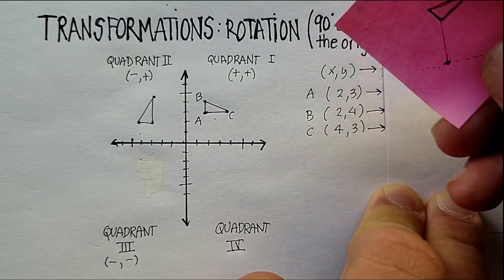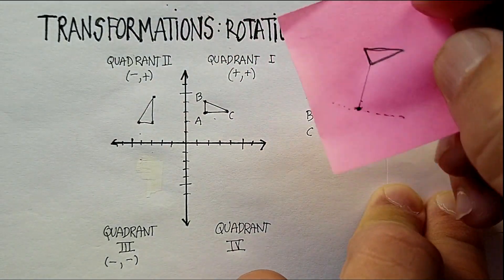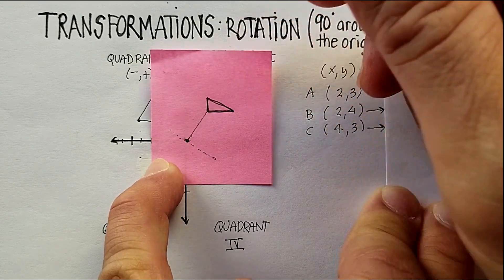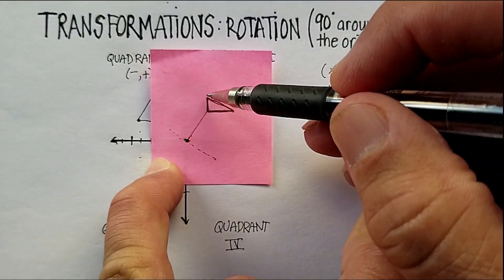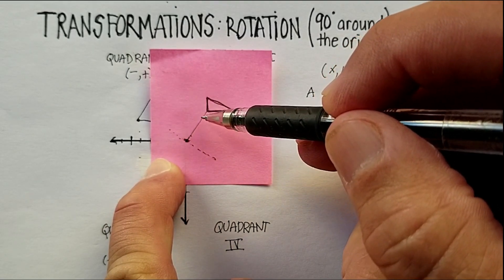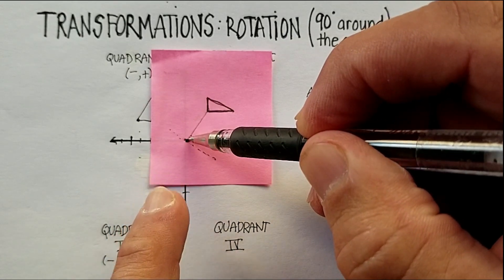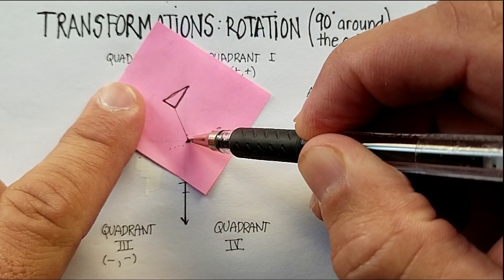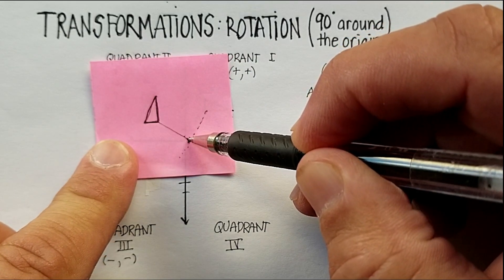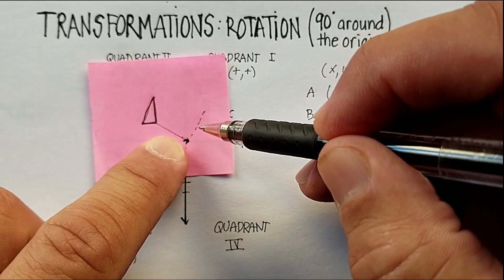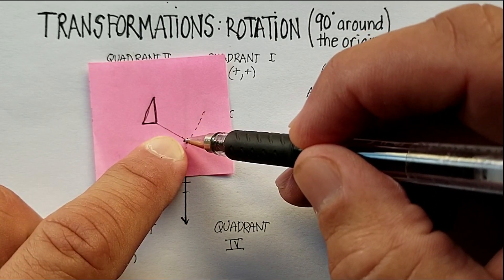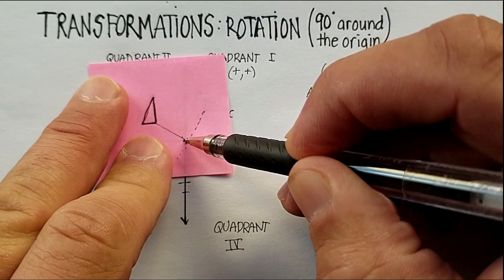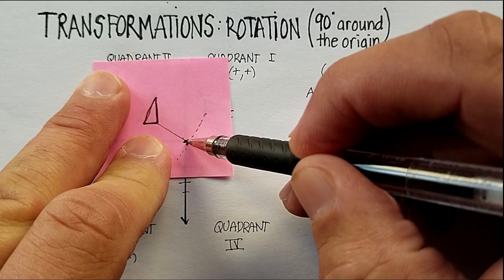I'm going to take this little triangle and show you what I mean. I drew it right on top of the triangle that was there and anchored it to the origin. When I rotate it 90 degrees counterclockwise, I move it in the counterclockwise direction 90 degrees, creating a 90-degree angle from where it originally was. You can see the triangle ended up pretty much right on top of the old one — that's a 90-degree rotation.